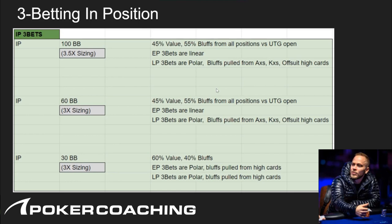I spent about 10 hours today looking at all these preflop spots for three-betting and took notes to sum everything up so you guys can get a quick understanding. For in-position three-bets — when under the gun or middle position opens and we are in position to that player — I took notes on different stack sizes: 100 big blinds, 60 big blinds, and 30 big blinds.